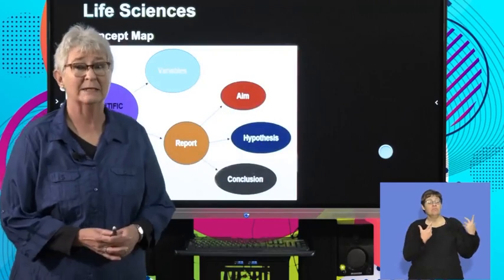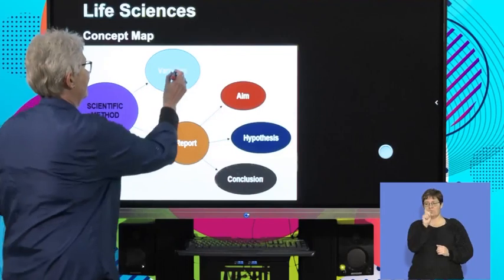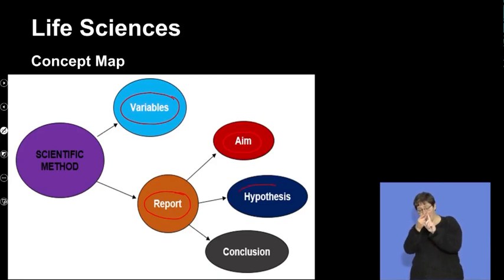What we're going to look at now is we are going to be using our knowledge of variables and how to write scientific reports. More specifically, what is an aim, what is a hypothesis and how are they different, and then how to write a conclusion. And from what we did in the first half of the lesson, you should be able to see that they actually are linked quite closely together.